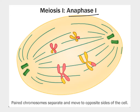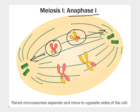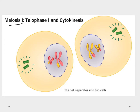In anaphase 1 there's a key difference from mitosis: instead of splitting sister chromatids in half, the whole chromosome moves to the poles — keeping a complete set in each half. By the end of meiosis I — telophase 1 — the spindle fibers are gone, nuclear membranes begin reforming, and cytokinesis splits the cell into two daughter cells, each with half the genetic material.